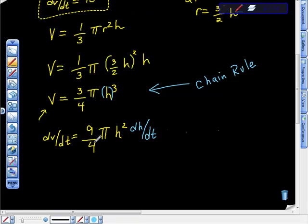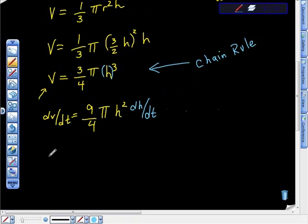What I'm going to do is I'm going to take the reciprocal of this whole thing. The reciprocal of this is four over nine pi h squared, isn't it?